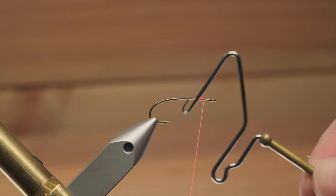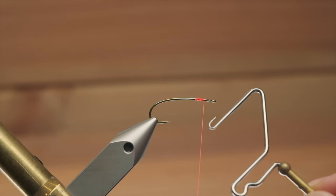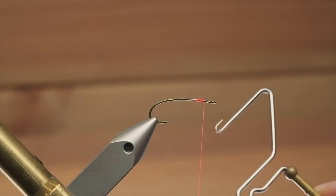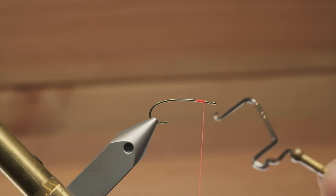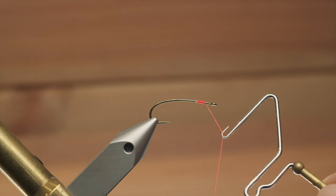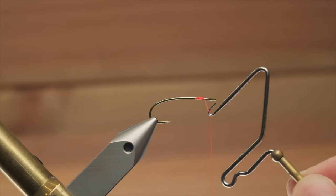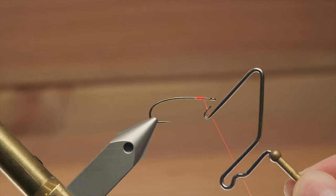Take your whip finishing tool and the first thing you'll do is take this little hook and put it on top of your thread and catch it. Once you've done that, you'll take your thread and take it around the indent on the finishing tool just like that.